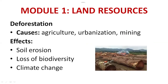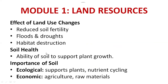What is deforestation? Cutting down trees, caused by agriculture, urbanization, and mining — these are the major reasons. Effects of deforestation include soil erosion, loss of biodiversity, and ultimately climate change. Effects of land use changes include reduced soil fertility, floods, drought, and habitat destruction especially for biodiversity.